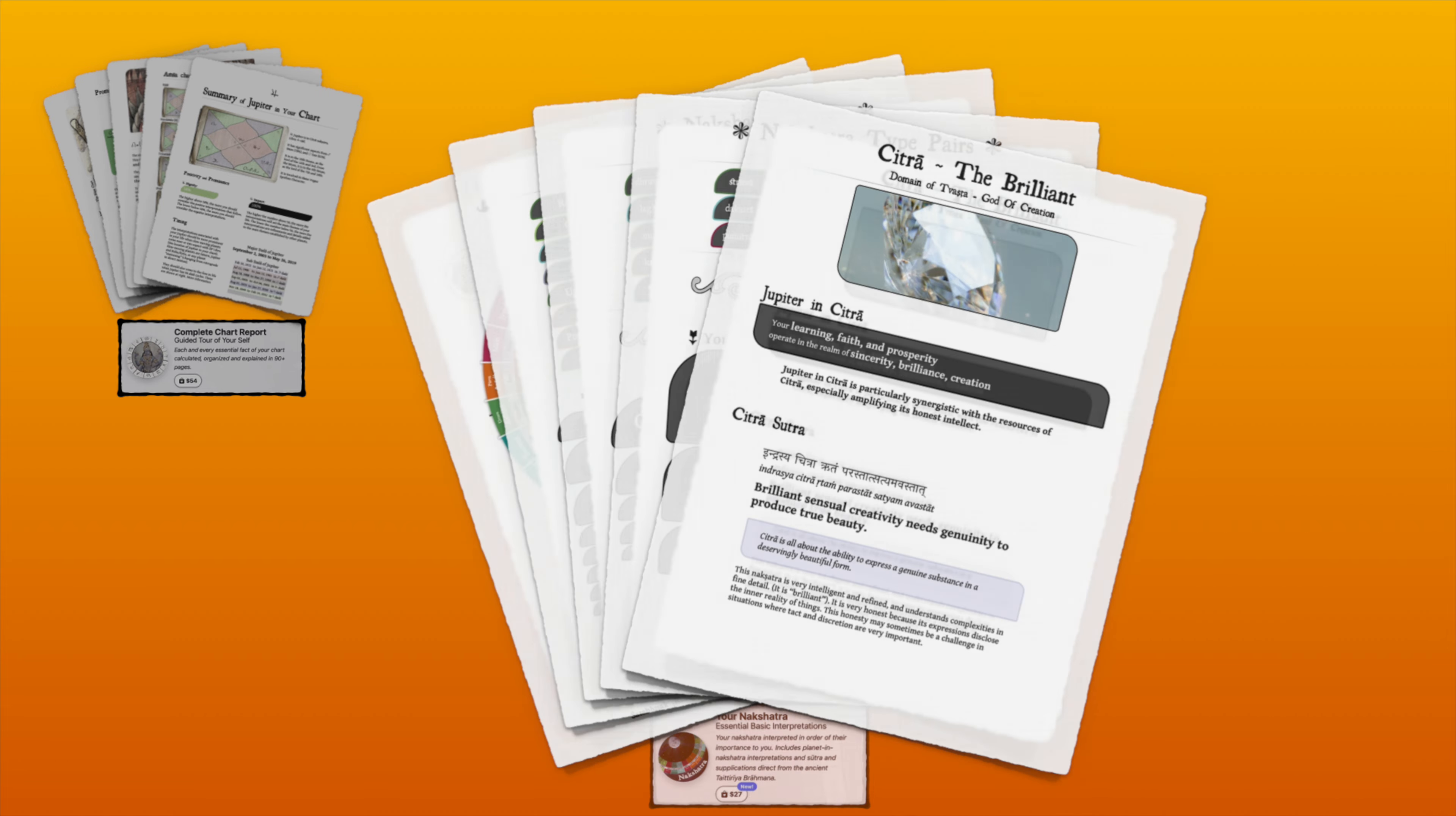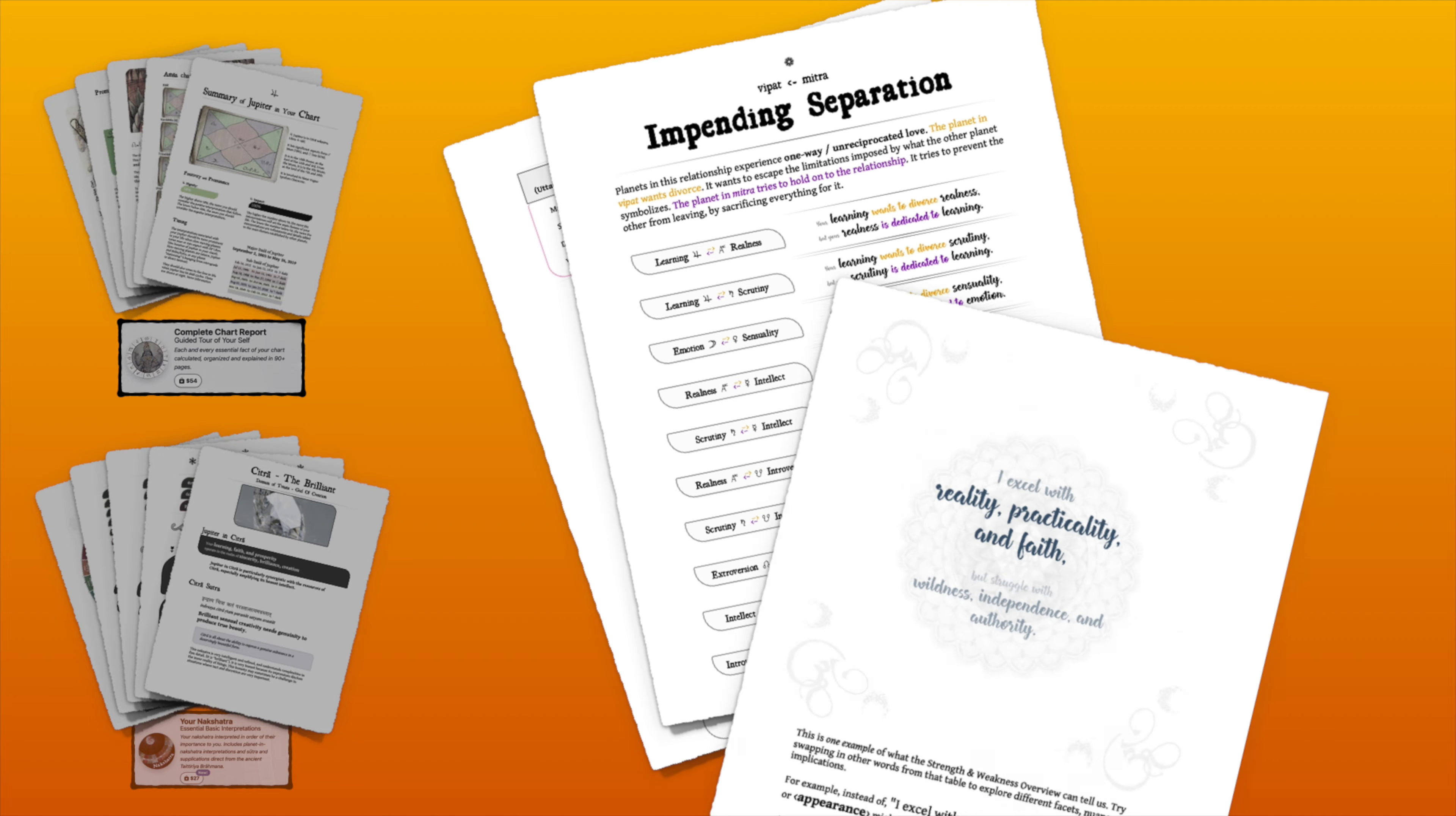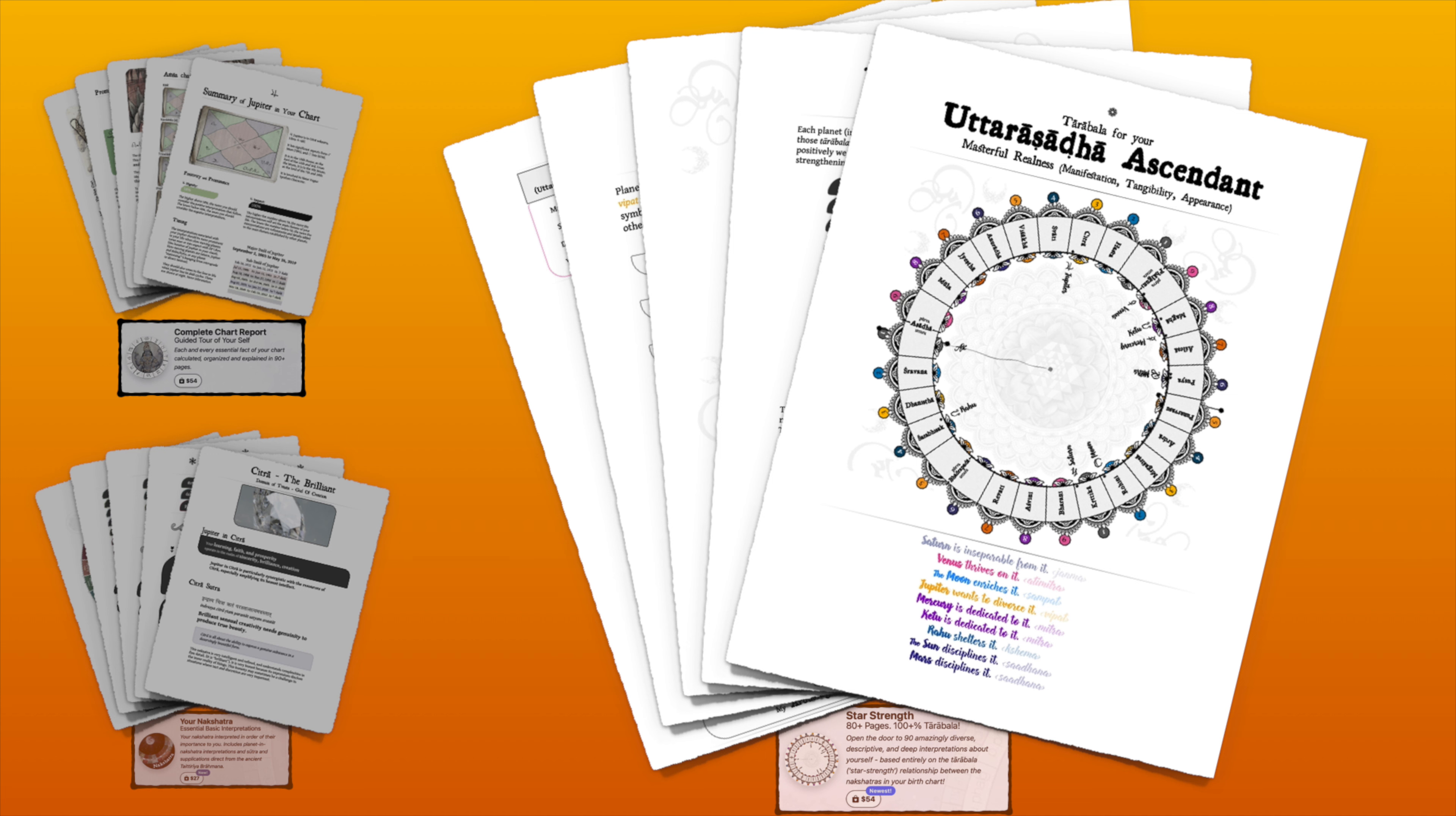The newest report, Star Strength, uses a system called Tarabala to unfold 90 interpretations of the nuanced relationships between all the planets in your chart, which paints a rich and detailed picture of how your various strengths cooperate or compete with each other. Order these or any of my reports and accelerate your journey to deeper self-understanding.